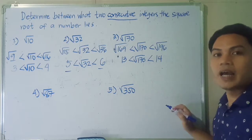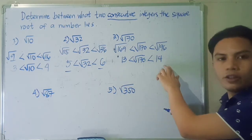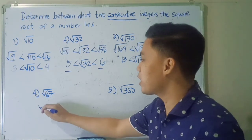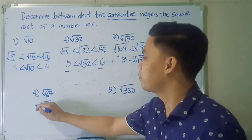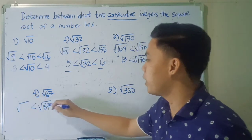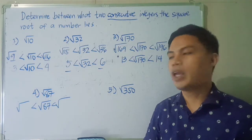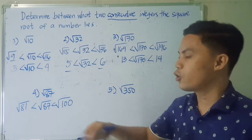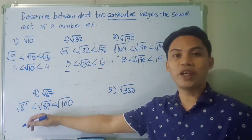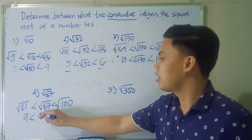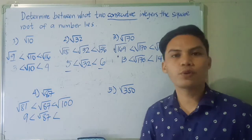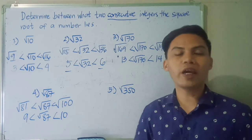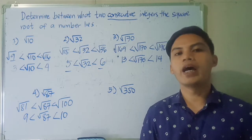So the square root of 179 is between 13 and 14. How about 87? The value 87 falls between the two perfect squares 81 and 100. Simplifying, the square root of 81 is 9, and the square root of 100 is 10. Therefore, square root of 87 is between 9 and 10.